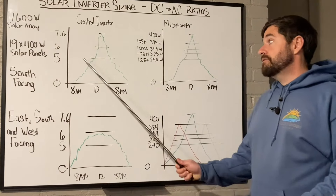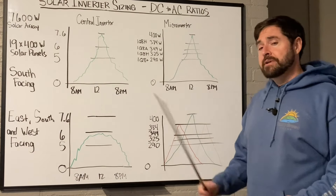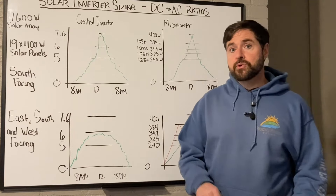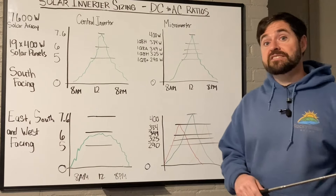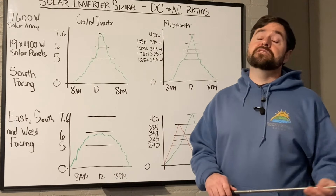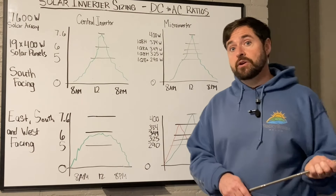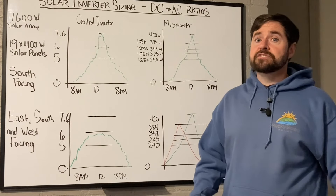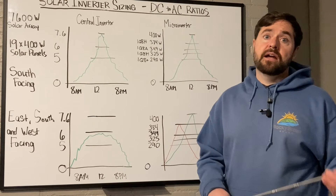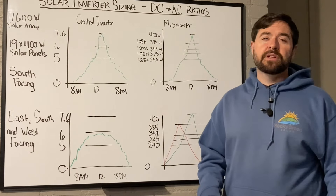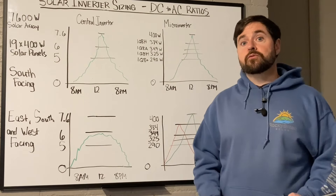For the next example, we're going to have a 7,600 watt array with a 5,000 watt inverter. You'll see that really does start clipping quite a bit of potential solar production. That's a 1.52 DC to AC ratio, and that's really pushing the limits. In some cases, some inverters won't even allow that DC to AC ratio, but the ones that do, you're often going to see excessive amounts of clipping. In my opinion, that high of a DC to AC ratio is really not acceptable, unless again, you have lots of shade or lots of different facing roof planes.